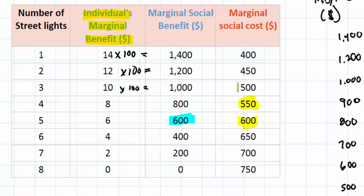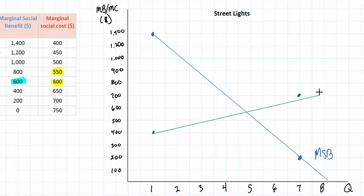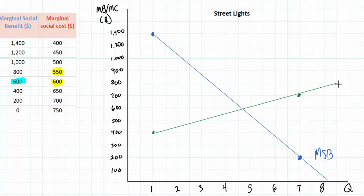We can plot the marginal cost curve by putting a couple of points from this supply schedule onto our graph. The cost of providing the first street lamp is four hundred dollars, so I can put a point right here. The cost of providing the seventh street lamp is seven hundred dollars, so I can put a point at a quantity of seven at a price of seven hundred dollars. Connecting these two points gives my marginal social cost curve, which can be considered the supply curve for street lamps in this small town.